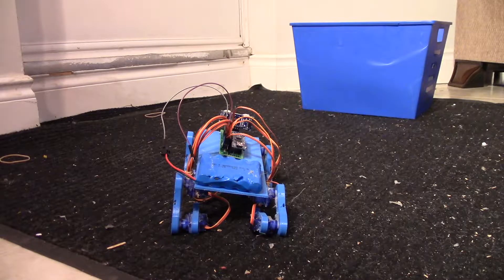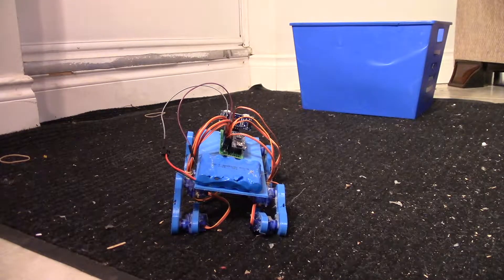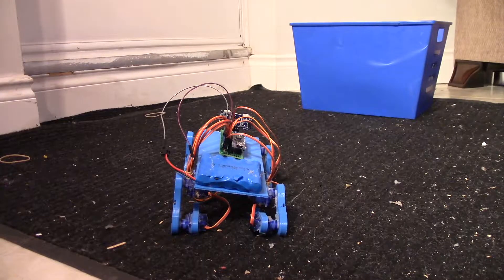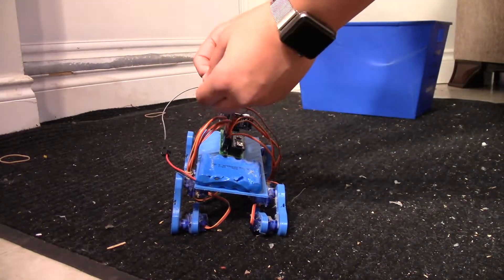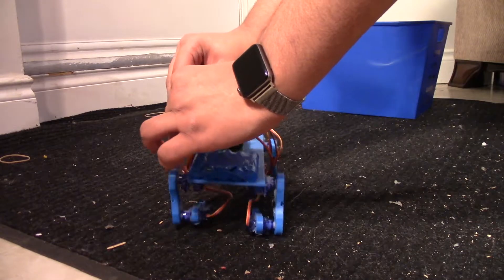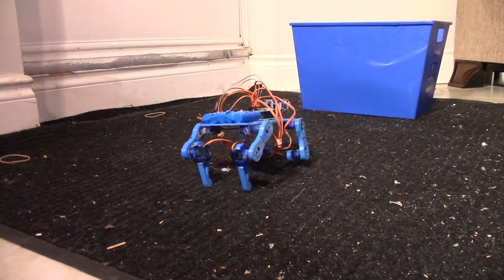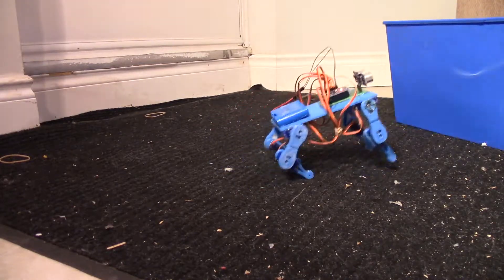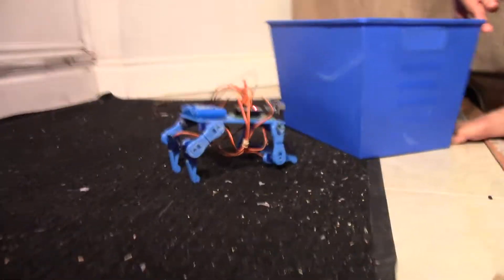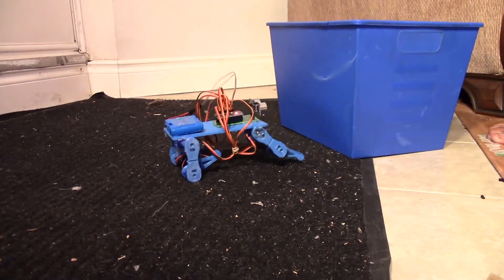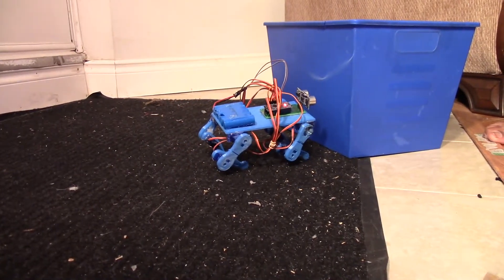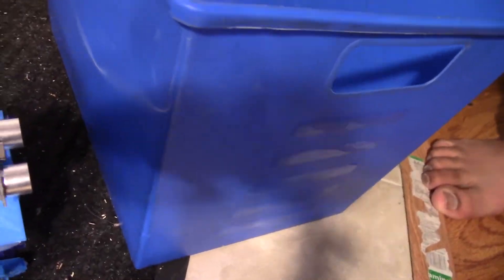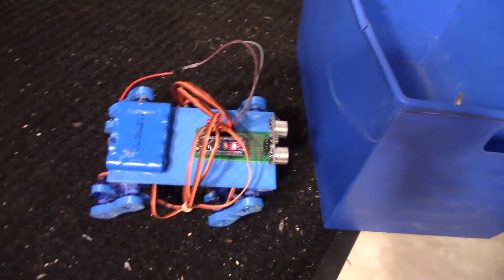So here we have our robot and the blue bin. It will walk forward and pretty much avoid the blue bin or stop at the blue bin. And there it stops right in front of the blue bin. There's about five centimeters of space, so the sensor does work indeed.